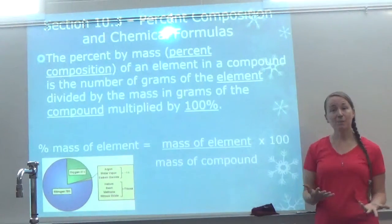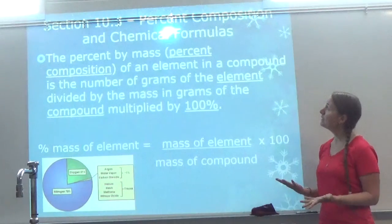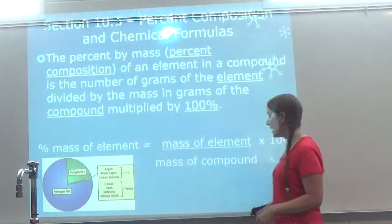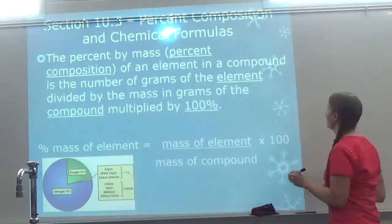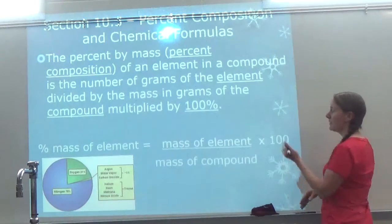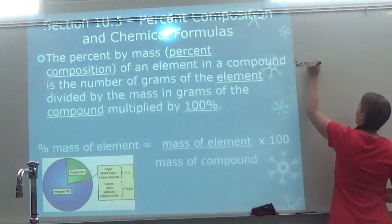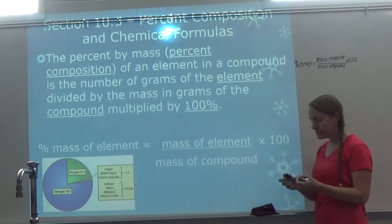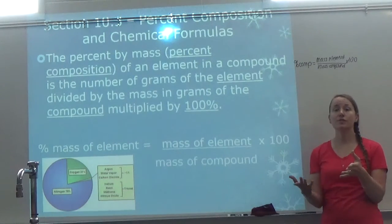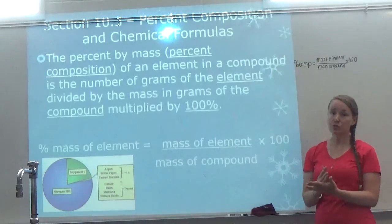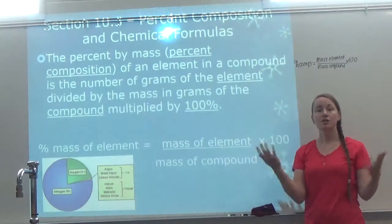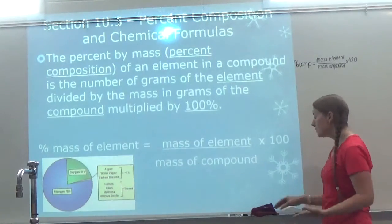The percent by mass, or percent composition — you'll hear it stated both ways — of an element in a compound is the number of grams of the element divided by the mass in grams of the compound, multiplied by 100. So our formula is: percent composition equals the mass of the element over the mass of the compound times 100. It's just how you would do any percentage. Like if I said, what percentage of our class is girls? We would count how many girls, count how many total students, and then do number of girls divided by total students times 100.